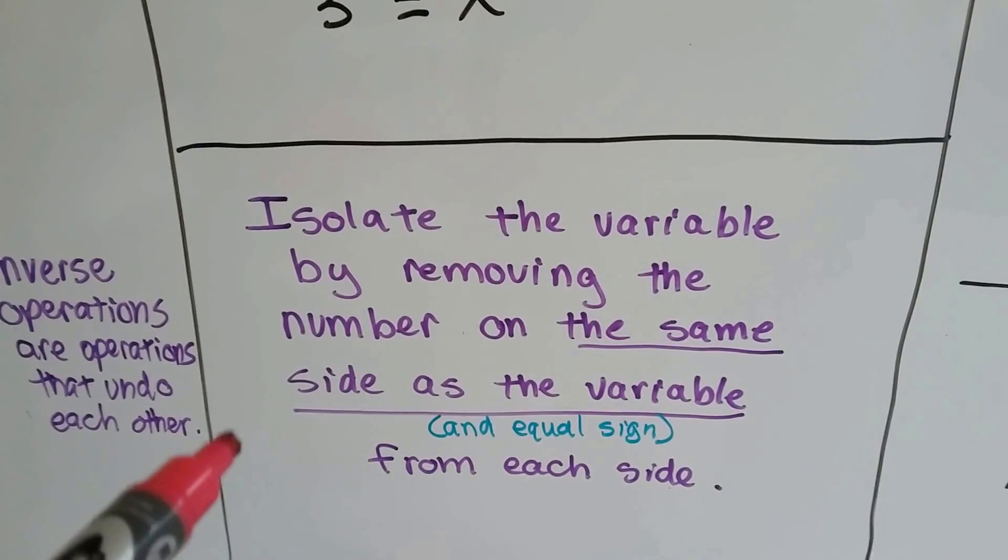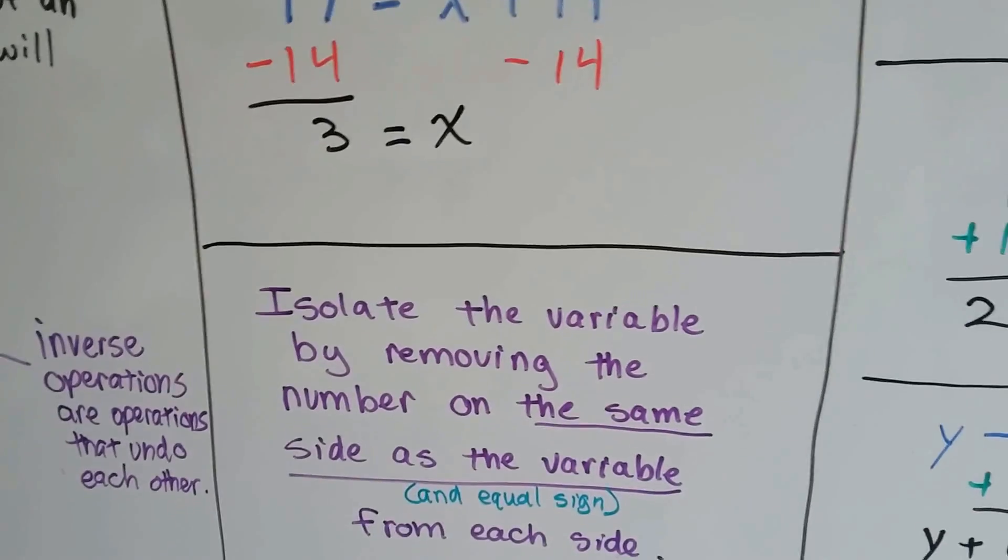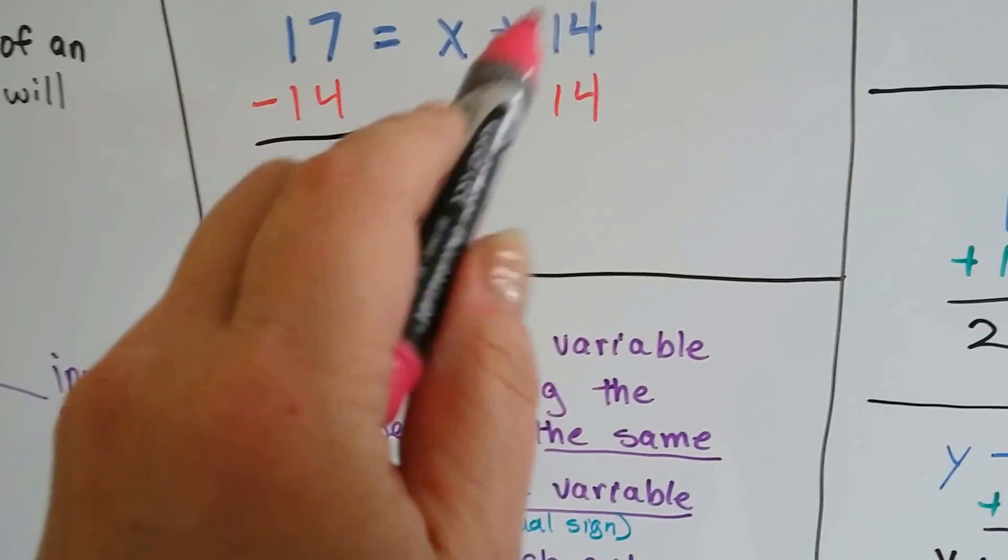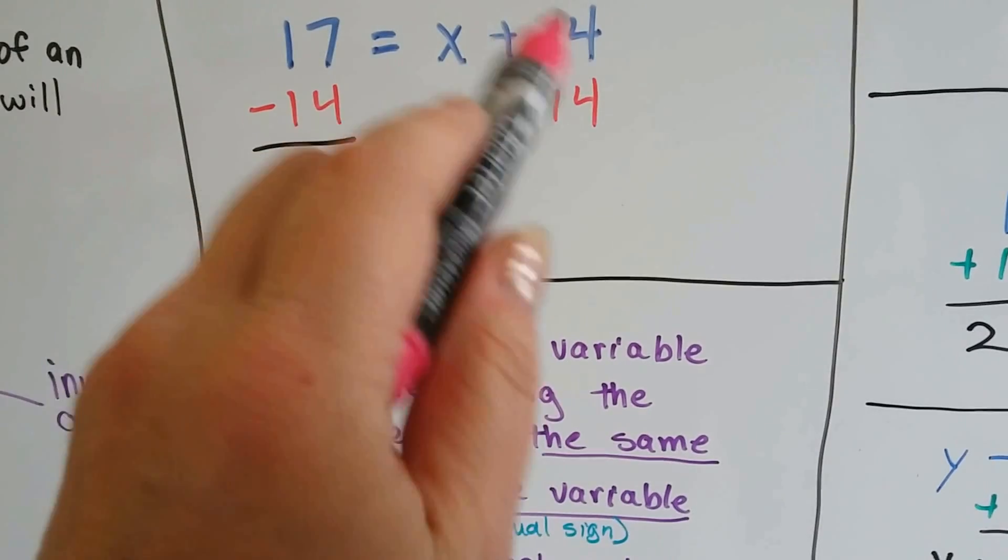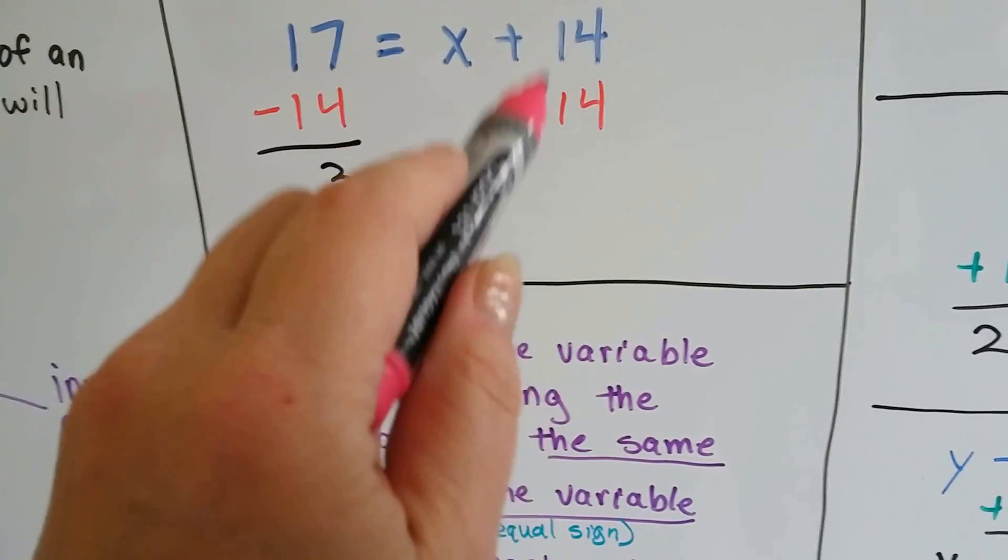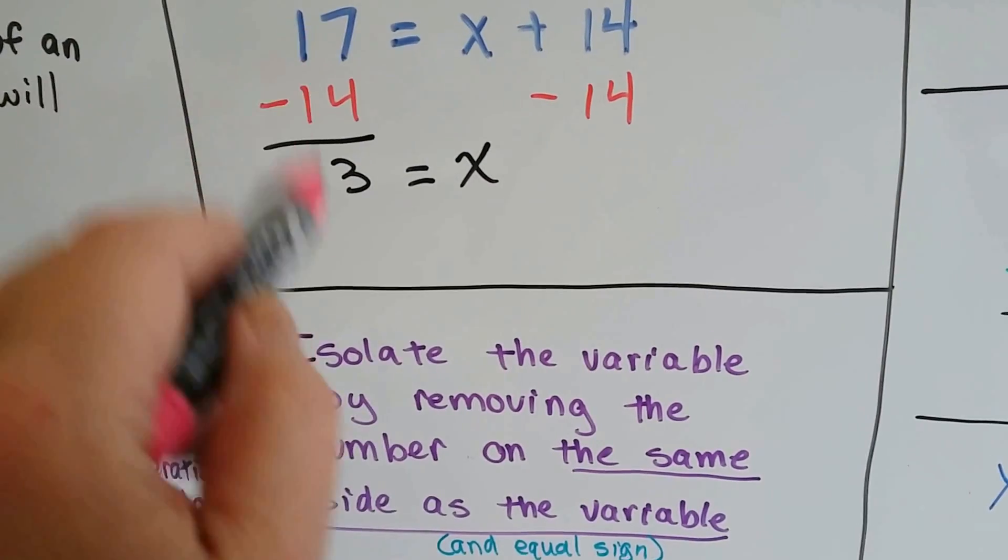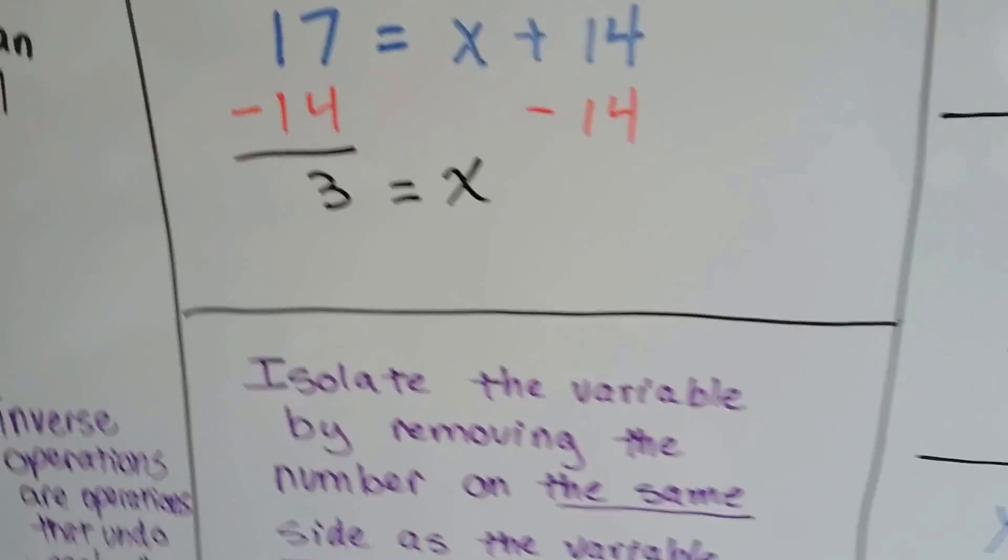So we isolate the variable by removing the number on the same side as the variable. Same side of the equal sign. If we can isolate the variable on this side of the equal sign by taking this number away that's on the same side of it, then we'll get to find out what its value is.